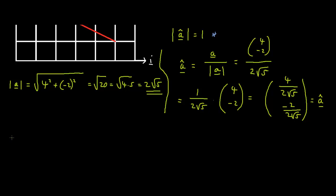Now, we want to find the magnitude of the unit vector a. Its magnitude is going to be equal to root 4 over 2 multiplied by root 5 squared plus minus 2 over 2 root 5.